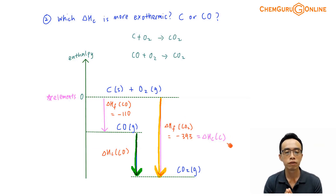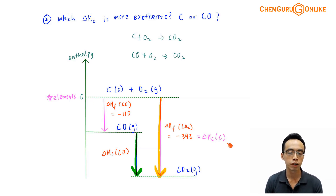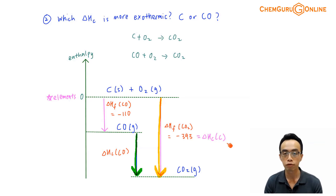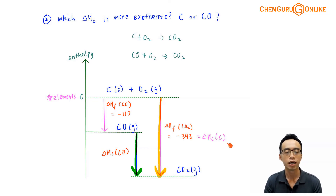Alright, so hopefully with this discussion we will have a better appreciation of making use of the energy level diagram to compare the magnitude of enthalpy change terms and to compare the stability of species. If you have learned something useful from this video, please give me the thumbs up, like this video, and subscribe to my YouTube channel for more weekly video lessons. That's all for now — I'll see you next week.